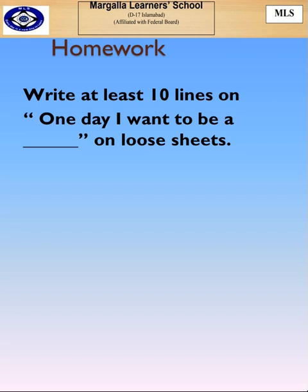Now what you have to do is write at least 10 lines on a creative writing topic. That is: one day I want to be a blank, on loose sheets. For example, if you say one day I want to be a doctor, you are going to write about yourself being a doctor one day — about 10 lines about it, on loose sheets. That's all.